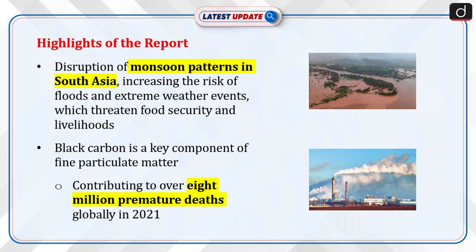Now let's discuss the highlights of the report. The report highlights the disruption of monsoon patterns in South Asia, increasing the risk of floods and extreme weather events, which threaten food security and livelihoods. Additionally, black carbon is a key component of fine particulate matter, PM2.5, which has severe health consequences, contributing to over 8 million premature deaths globally in 2021.